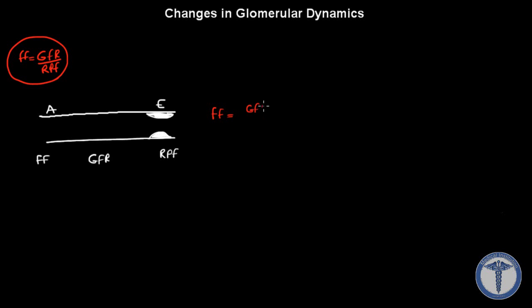Let's say the question tells us that there is vasoconstriction on the efferent arterioles. This is our afferent arterioles, this is our efferent arterioles, and the question is saying there is vasoconstriction on the efferent arterioles. They're asking us what's going to happen to filtration fraction, GFR, and renal plasma flow. We can answer these questions in five seconds — first, write down the formula: Filtration Fraction = GFR / Renal Plasma Flow.